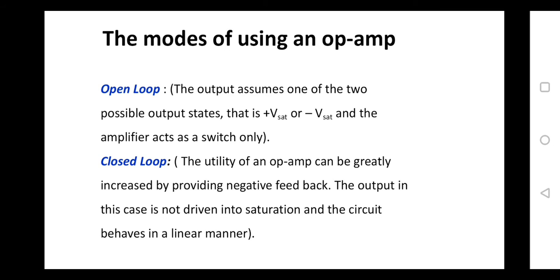In open loop mode, the op-amp has two terminals — inverting and non-inverting. If we apply two signals V1 and V2 to the inverting and non-inverting terminals, the gain will be infinite. The output voltage will vary between positive saturation or negative saturation depending on whether V1 is greater than V2 or V2 is greater than V1. So in open loop mode, the output has only two values — either plus Vsat or minus Vsat — and due to this reason the op-amp can be used as a switch. Using the op-amp in open loop configuration gives us a limited number of applications.